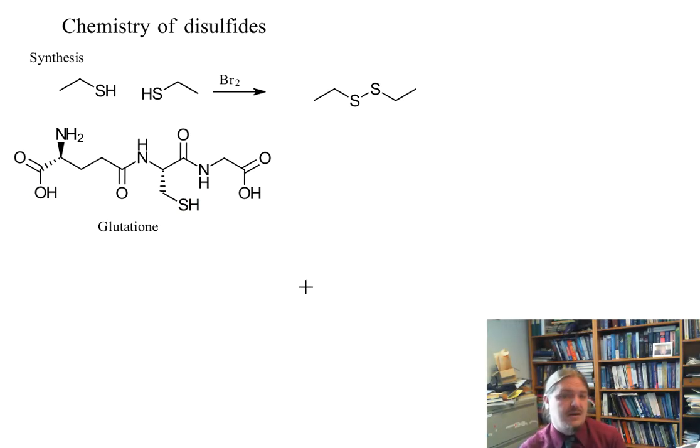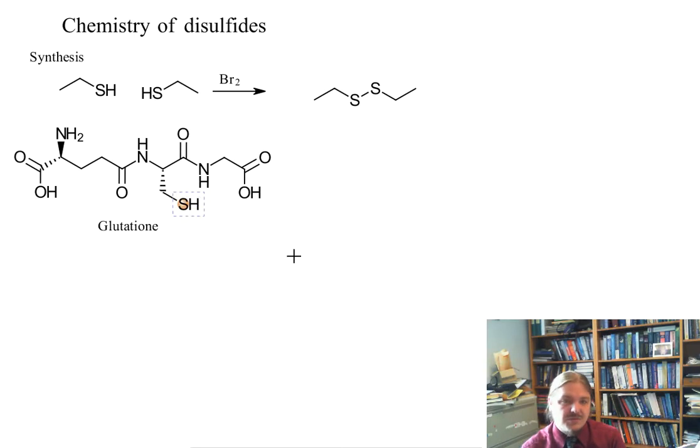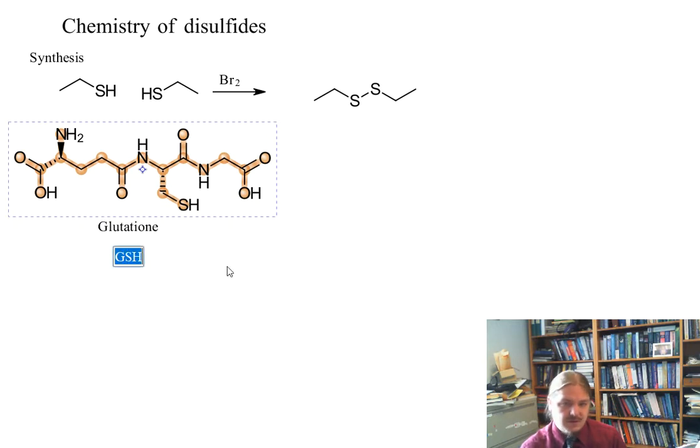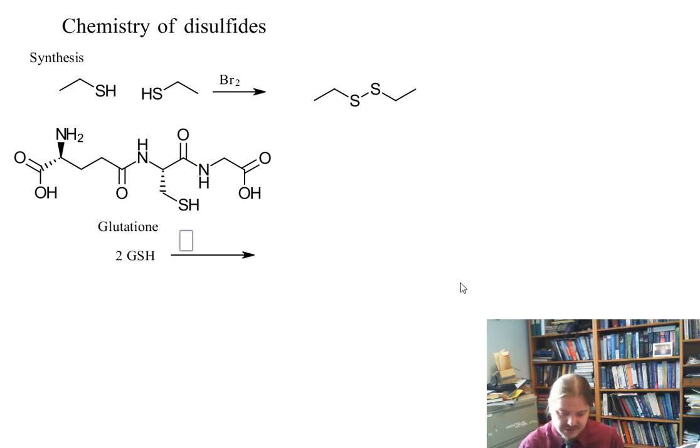One such thiol that can protect against oxidation is glutathione. Glutathione is a tripeptide with a cysteine amino acid that has a thiol functional group. We'll represent glutathione with the letters GSH. Upon oxidation by reactive oxygen species and other reagents, glutathione oxidizes to its disulfide form.